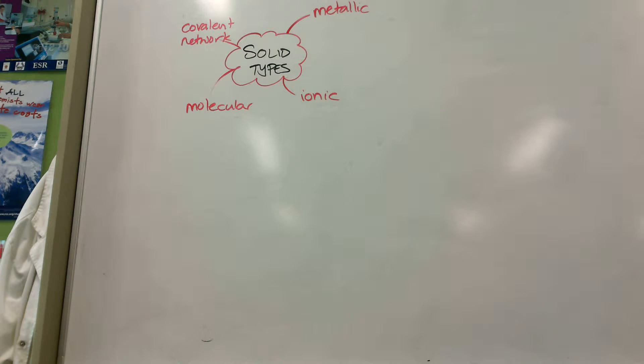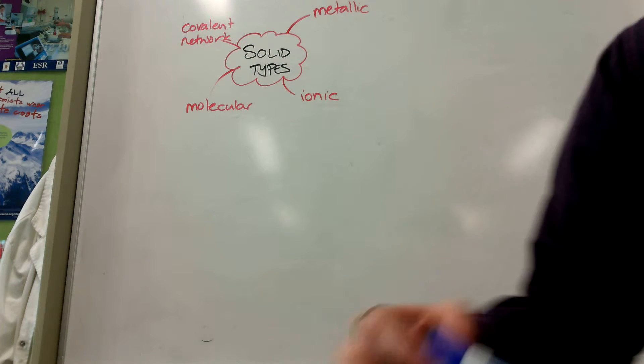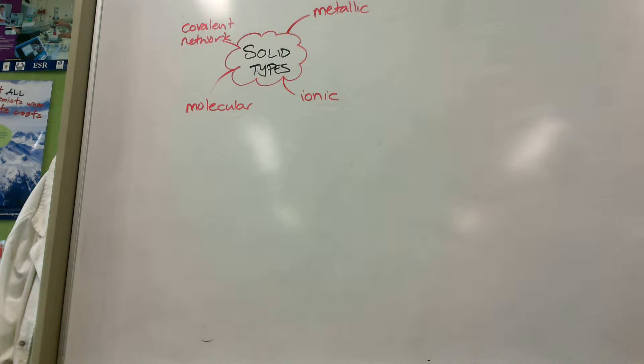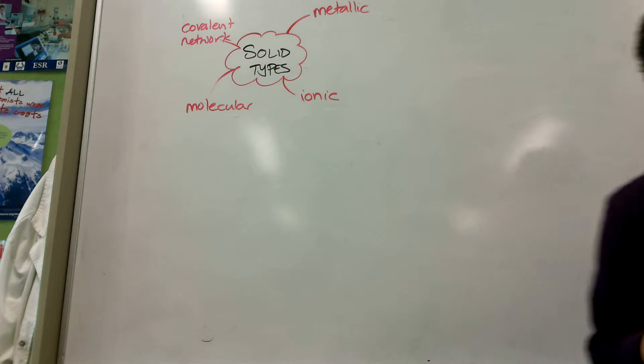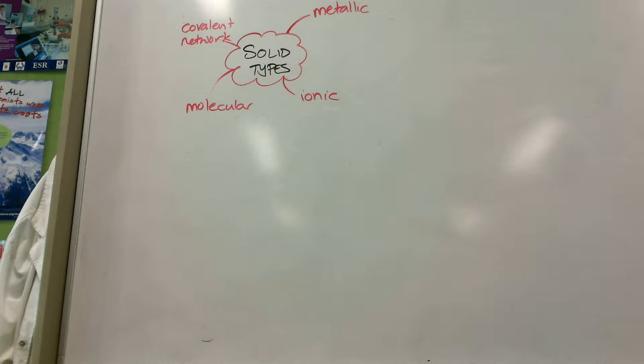Then they might be asking you to identify the types of particles present in those substances. So pick these off one at a time and say, what are the particles? So what do we have in an ionic compound or ionic solid? Ions.